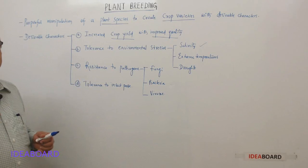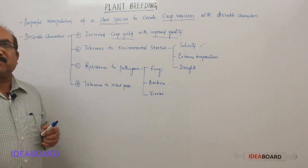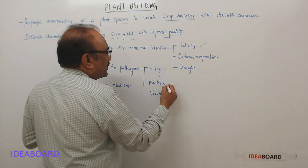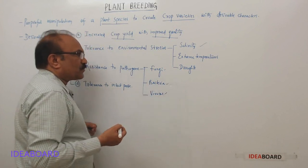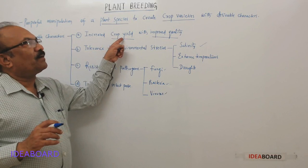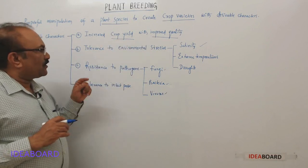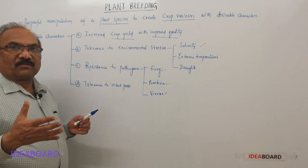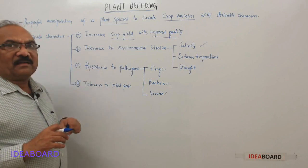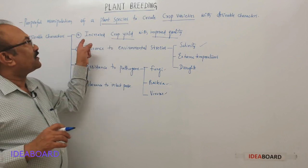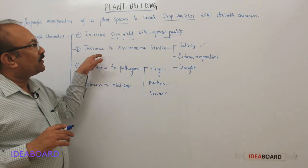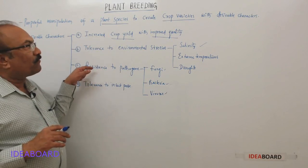Plants also get many diseases caused by different agents called pathogens. Plants are affected by fungal, bacterial, and viral pathogens, and they should resist these pathogens. Additionally, plants should have tolerance to insect pests, as insects also attack plants. Only when disease resistance and pest tolerance are fulfilled can we expect increased crop yield and improved quality.